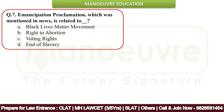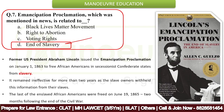Next question: the Emancipation Proclamation, which was mentioned in the news, is related to what? The correct answer is the end of slavery — option D. Note: don't confuse it with the right to abortion, which is also in the options. Former U.S. President Abraham Lincoln issued the Emancipation Proclamation on 1st January 1863 to free African-Americans in secessionist Confederate States from slavery.